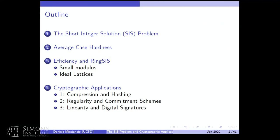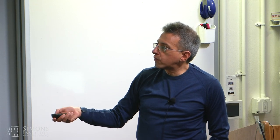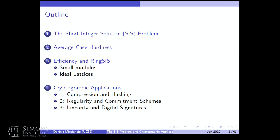What I want to cover today is a number of topics. I will start with the definition of the problem. I already sketched it yesterday. I'll go over the definition again connected to lattices, and then show that the problem is hard on the average, which is the hardness needed to build the cryptographic applications. I will not give a full proof — I condensed the proof on a single slide — but it gives a very precise idea of why the problem is hard. After that, we'll move into efficiency issues: what is required for lattice cryptography to be efficiently implemented.